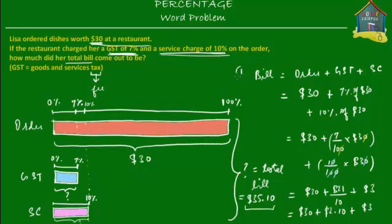This is method number one — we found the dollar amounts of each of the three components: the order, the GST, and the service charge. But instead of converting each to dollars, in method two we simply add up the percentages of each component and then find what the bill equals.